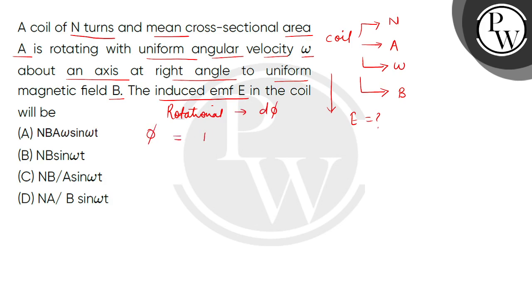We will get flux as the number of turns multiplied by the dot product of magnetic field vector and area vector. Now, the area vector will always be normal to the area.